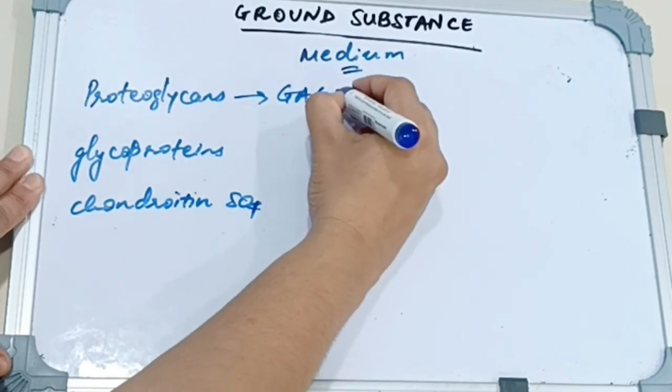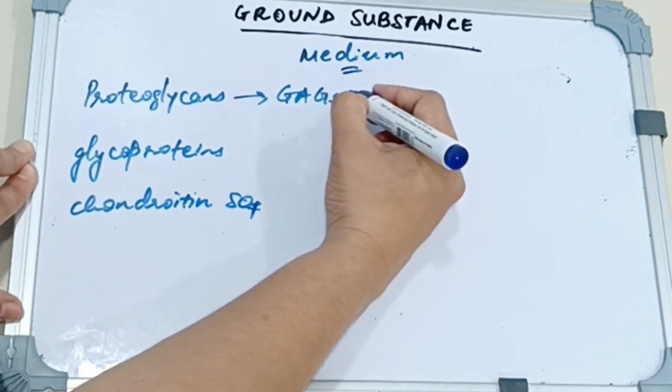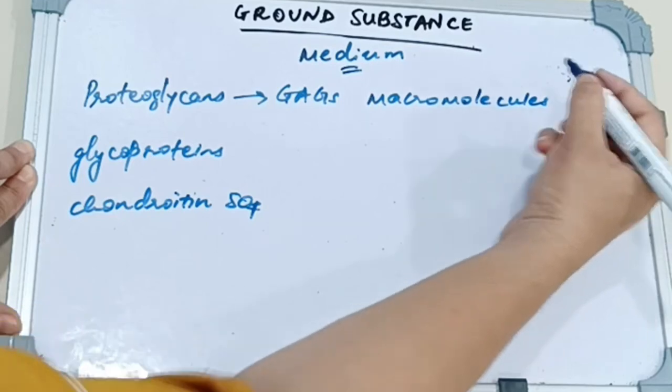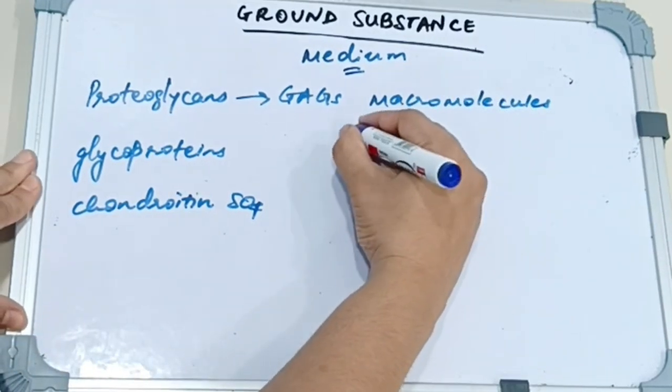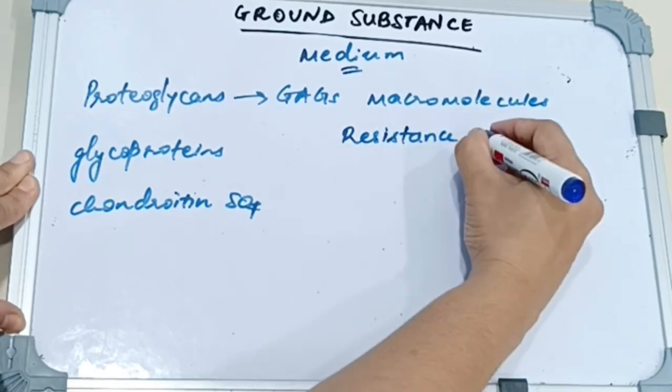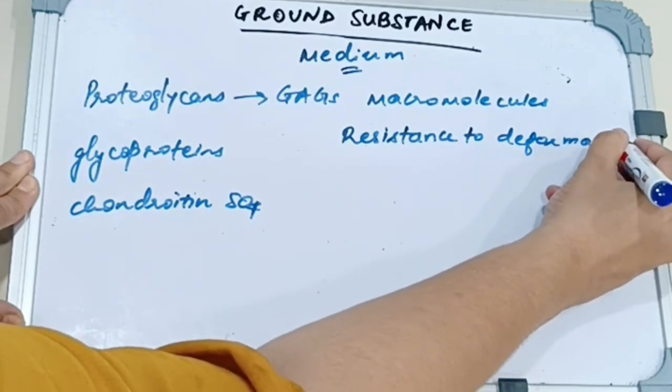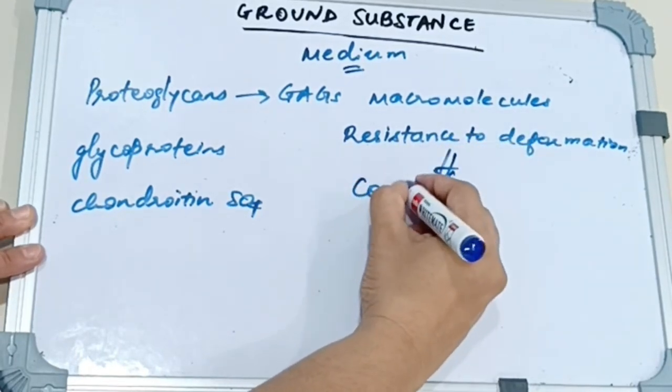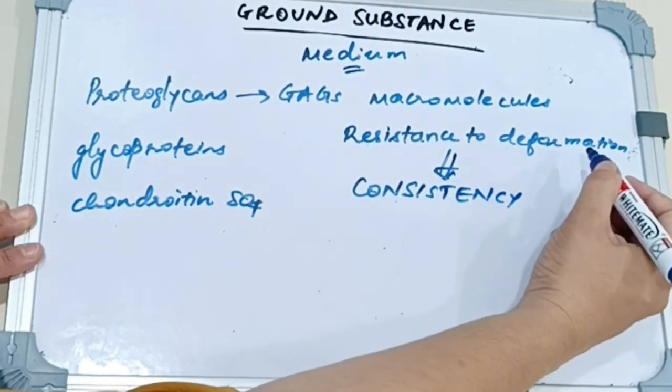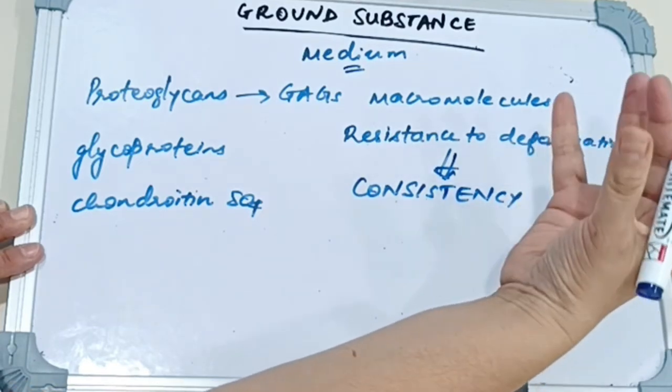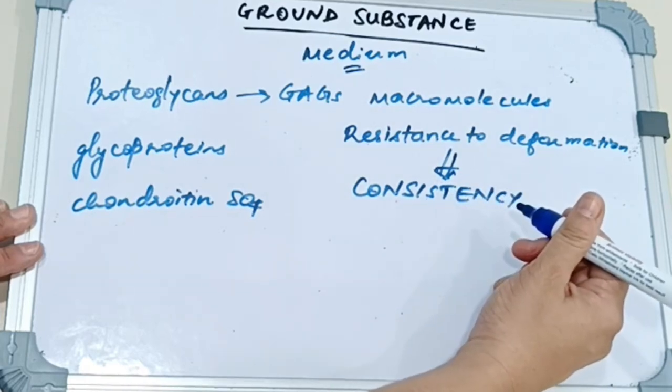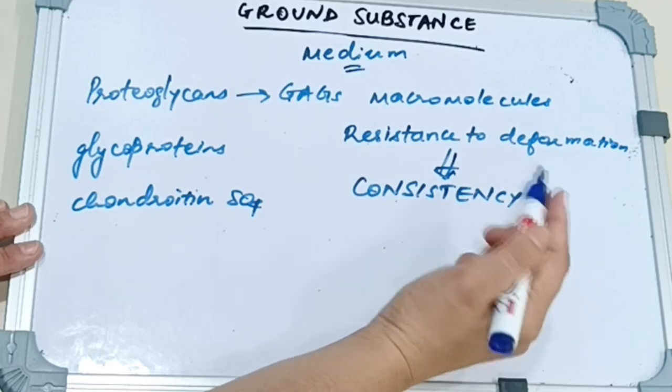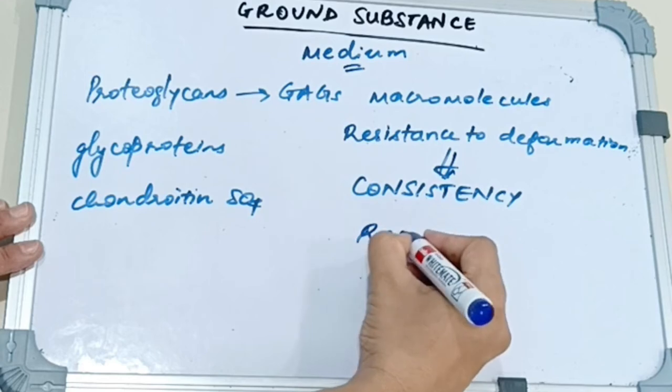The proteoglycans contain glycosaminoglycans. These are carbohydrate units which are attached to each other by proteins. Now these are macromolecules or large molecules which owing to their structure and hydration, they exert resistance to deformation. That means they do not allow the gingiva to deform easily. They regulate the consistency of the gingiva. So if for some reason these macromolecules are suppressed or they are deformed, then the consistency of the gingiva gets altered. When the pressure is elevated, the macromolecules regain their original form and the gingiva consistency comes back to its original form. These macromolecules are responsible for the resilience of gingiva.